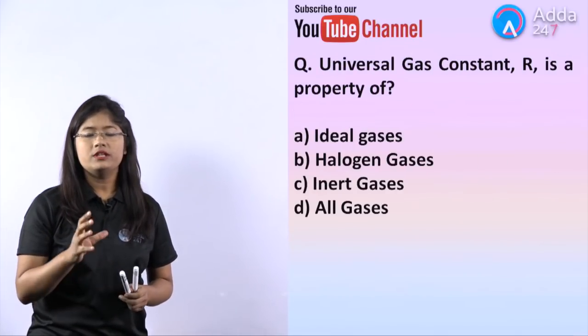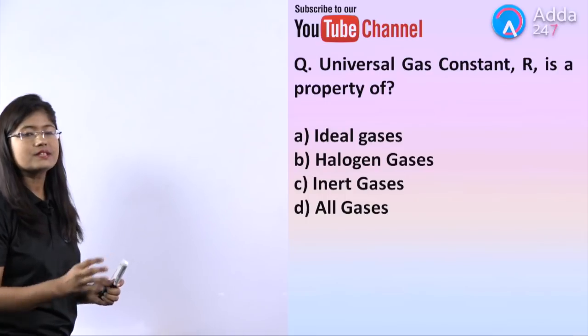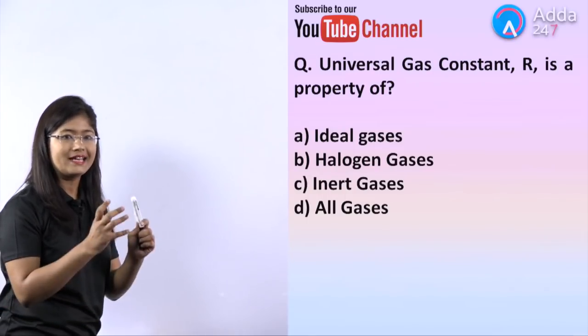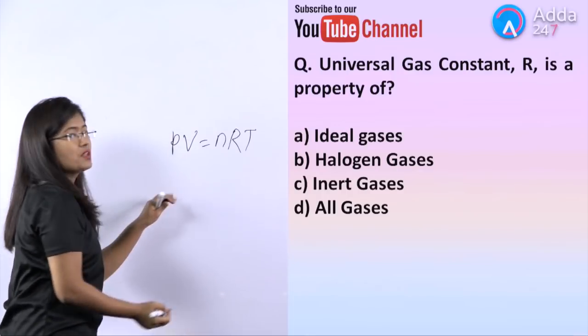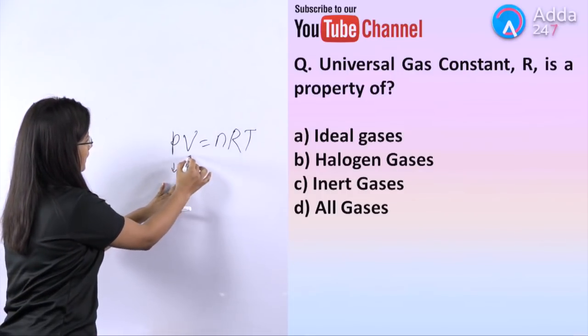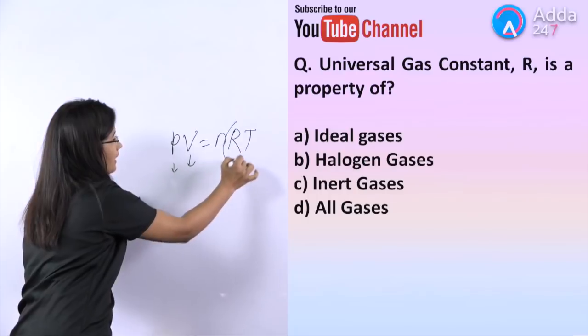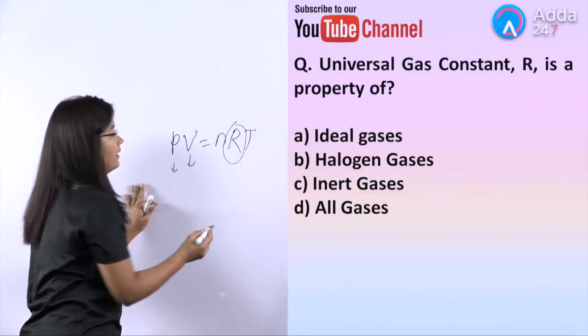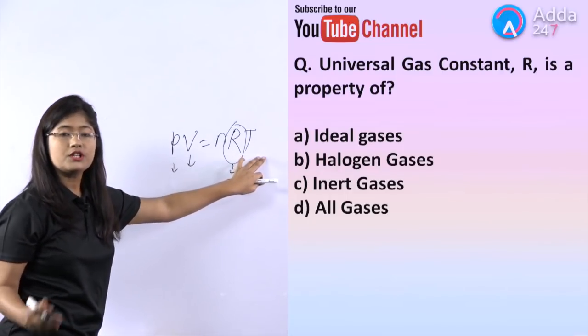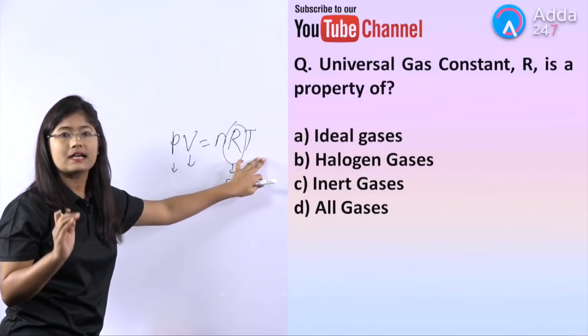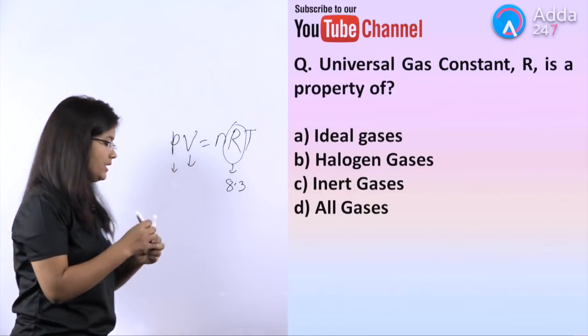The next question is: universal gas constant R is a property of? Remember, there is a law that applies for ideal gases only. It is PV equals to NRT. Here P is pressure, V is volume, N is number of moles, R is the universal gas constant with value 8.3, and T is temperature. This is the ideal gas equation, so R is a property of ideal gas.